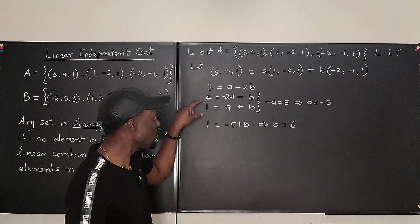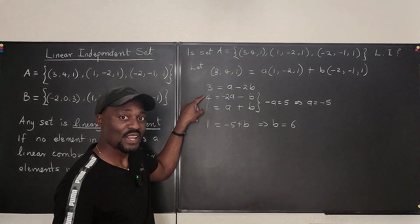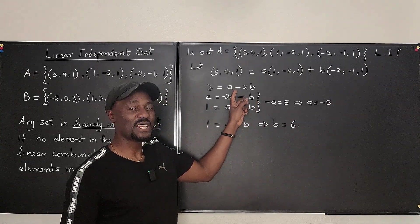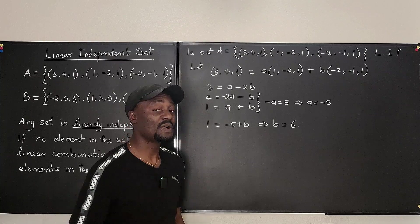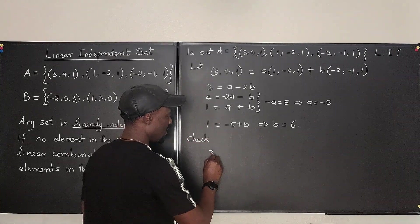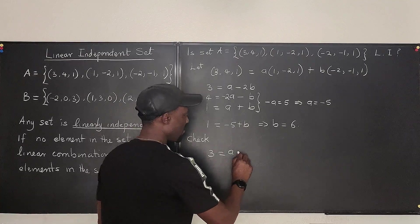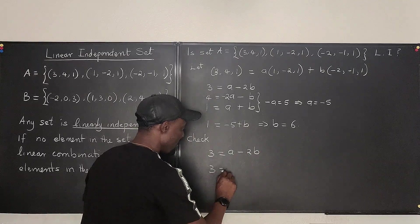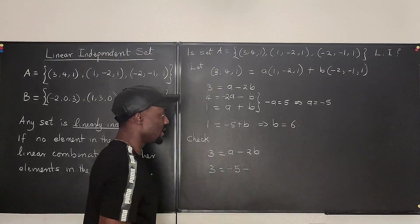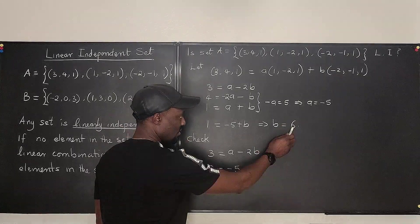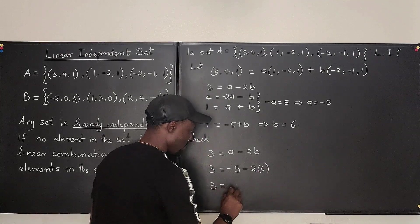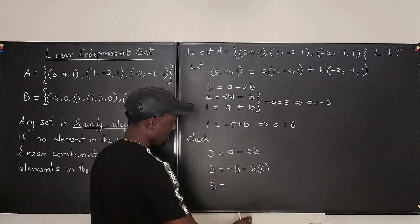So A is negative 5. B is 6. Well, we have used these two equations to find these answers. Let's go plug these two in in an equation we didn't use and see if it is justified. So check. 3 is equal to A minus 2B. So 3 will be equal to what is A? We said A is minus 5 minus. What is B? B is 6. So minus 2 times 6. Okay. So it means 3 equals.